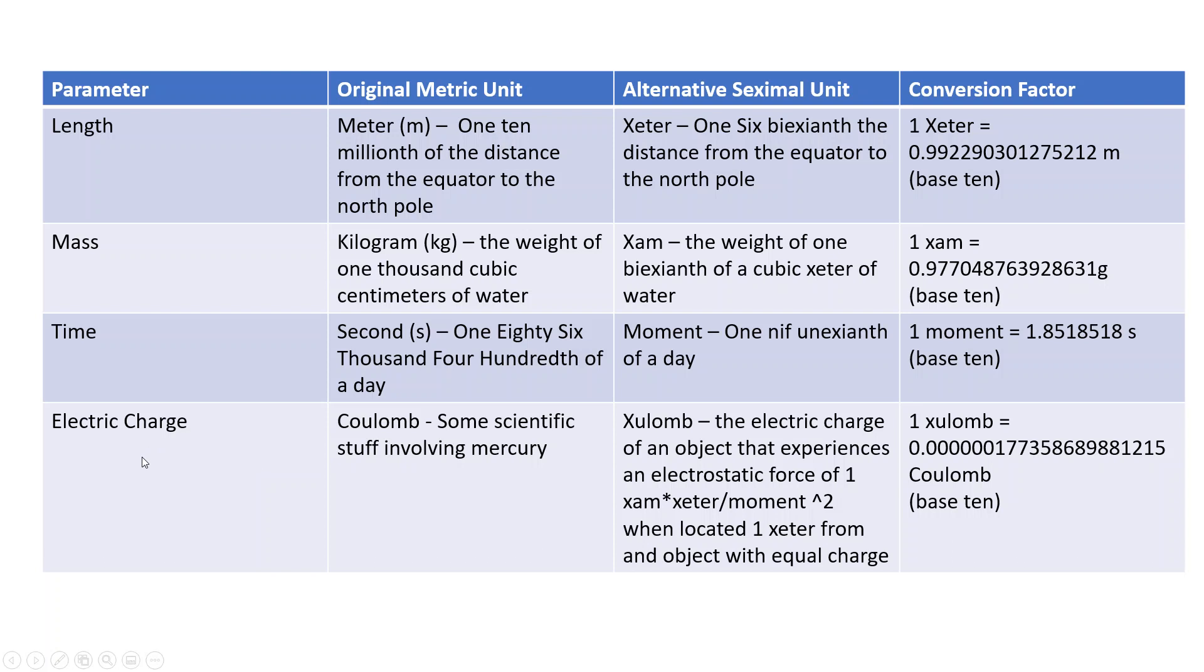Then we have electric charge, which he doesn't even address. But I figured I would just because I'm something of a completionist. So, originally, we had the Coulomb, which was defined based on some scientific stuff involving Mercury. Look it up on Wikipedia if you really want to know the details. The truth is that there's not a nice description like these ones have. However, I've come up with one that I think has a better description. So, of course, I'm calling it the Zulomb, because what else would I call it? I'm not that great at coming up with names. And I'm defining that to be the electric charge of an object that experiences an electrostatic force of one zam zeter per moment squared when located one zeter from an object with equal charge. That seems pretty straightforward. And if you're wondering what that works out to be, one Zulomb turns out to be this small fraction of a Coulomb. Works out well. You can always add the prefixes on if you want to figure out what is Unixian Zulom, Zurbiaxian, or anything else.